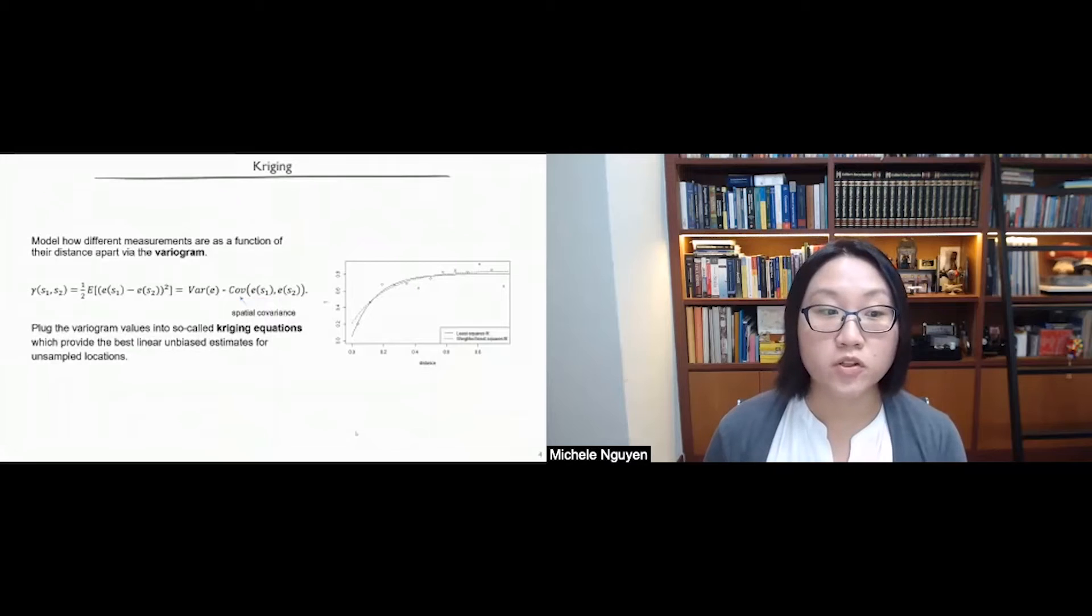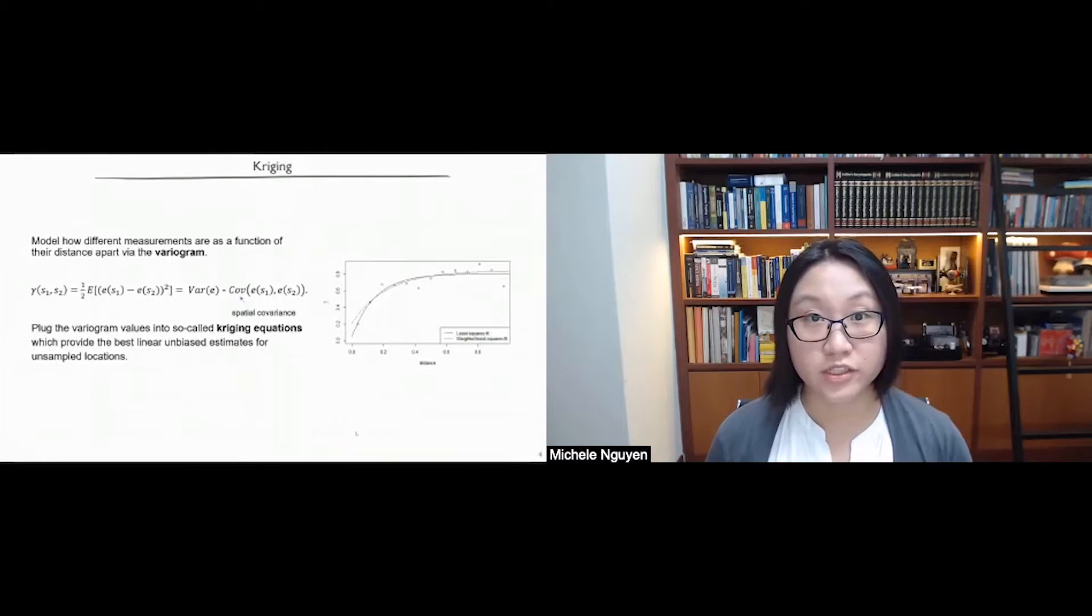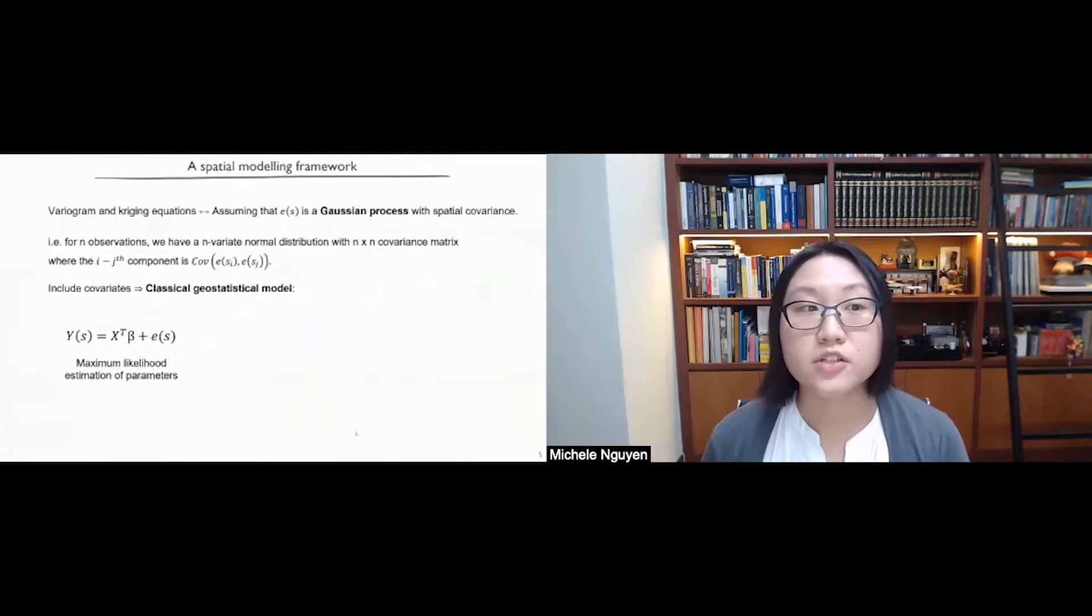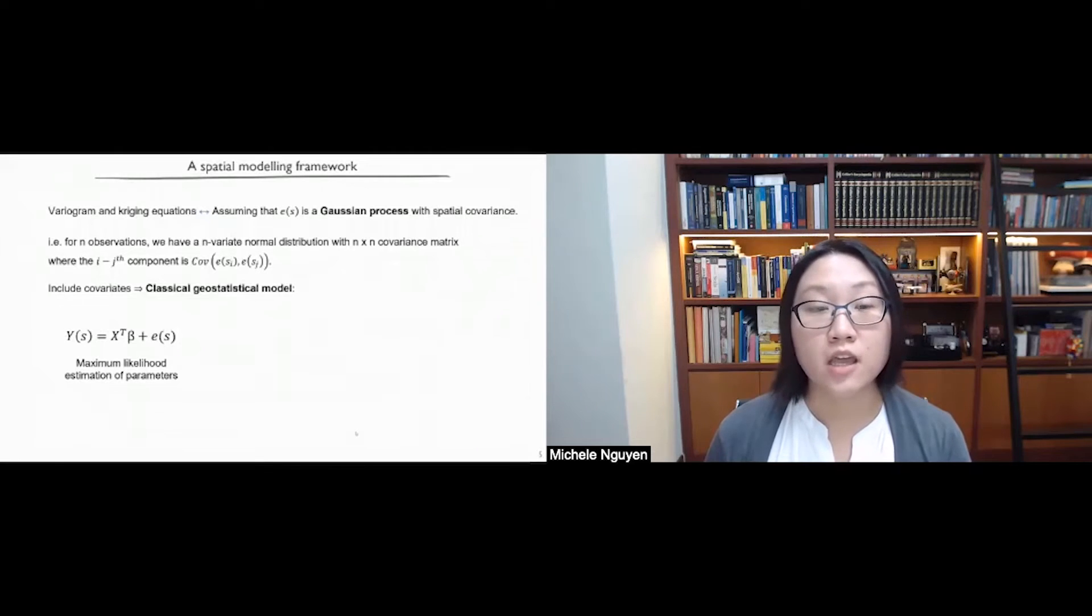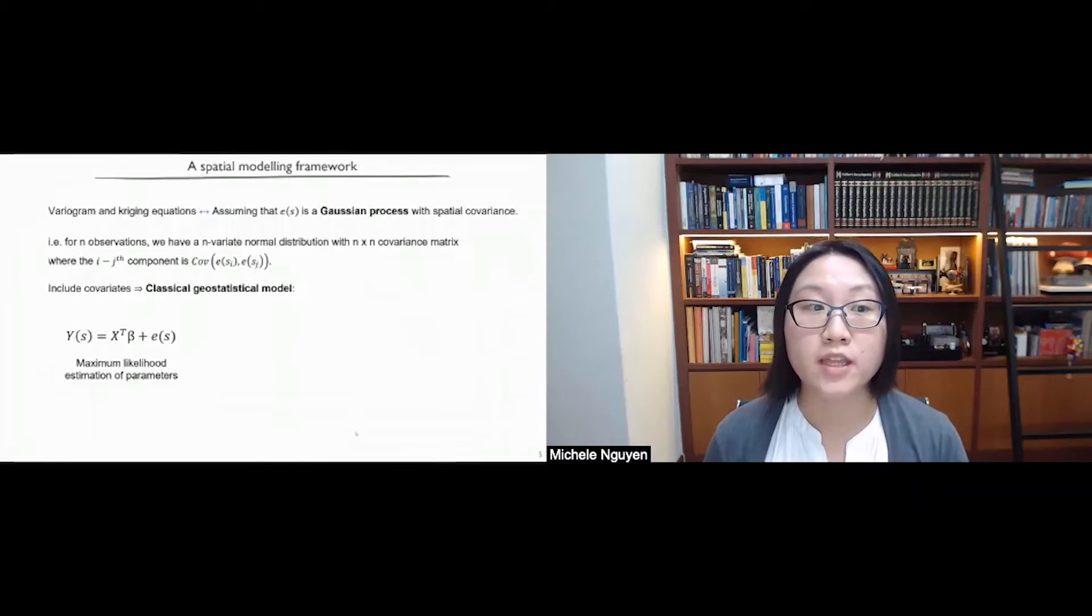So once we have modeled the variogram using our data, we can plug its values into so-called Kriging equations to give us the best linear unbiased estimates for the unsampled locations. So this traditional Kriging approach is in line with us assuming that the process of interest is a Gaussian process with the corresponding spatial covariance. For such a process, any n observations is assumed to have n-variate normal distribution with a covariance matrix whereby the entries correspond to the assumed spatial covariance function as well as the locations of interest.